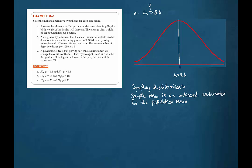We are going to employ a sampling technique that will provide for us a random sample. Now this sample will not be exactly representative of the population, but if the sample is of sufficient size, then we expect it to closely approximate the population. One of the things that we have to keep in mind is that we can't prove anything with a sample.